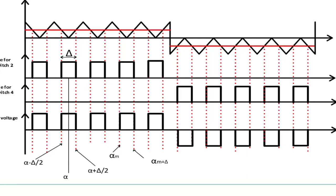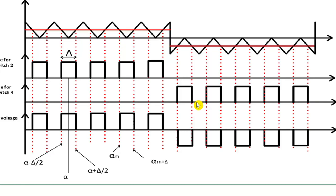The carrier signal decides the switching frequency of the switches, and the reference signal decides the output voltage frequency. Whenever the reference signal is greater than the carrier signal, you get a pulse. When the reference signal is less than the carrier signal, the pulse is absent. For simplicity, I have shown five pulses in one half cycle — five pulses from 0 to pi, and five pulses from pi to 2pi.